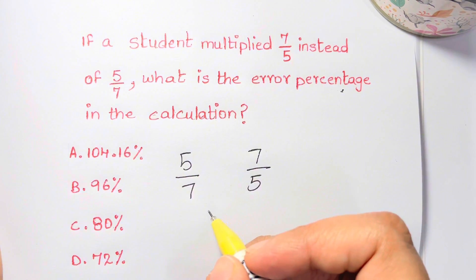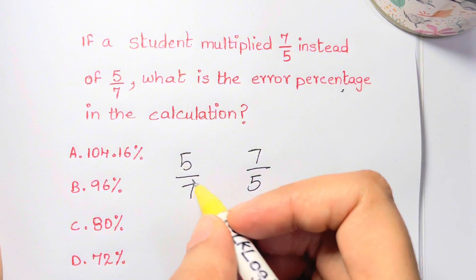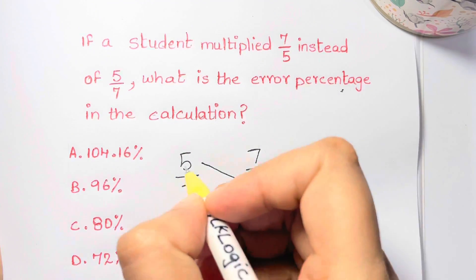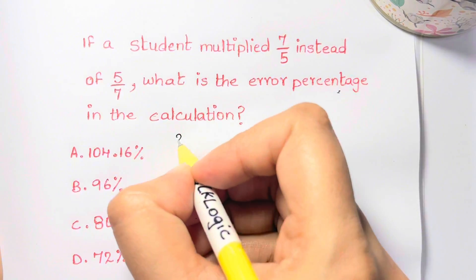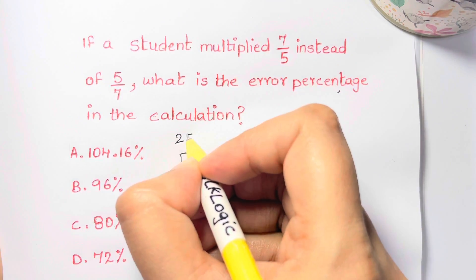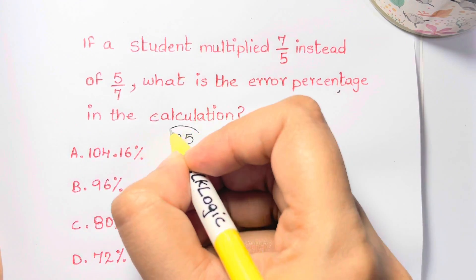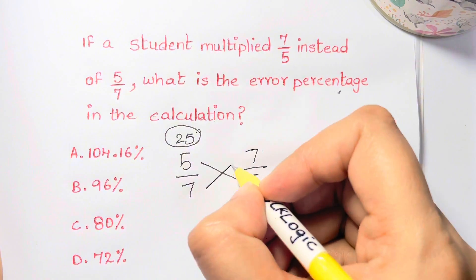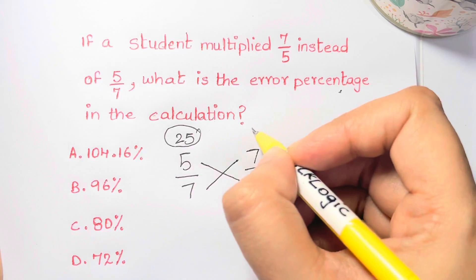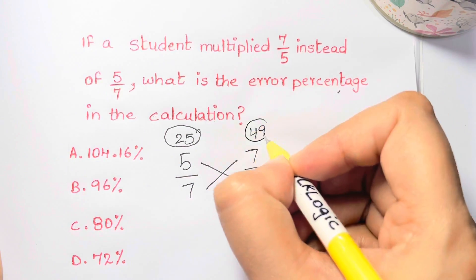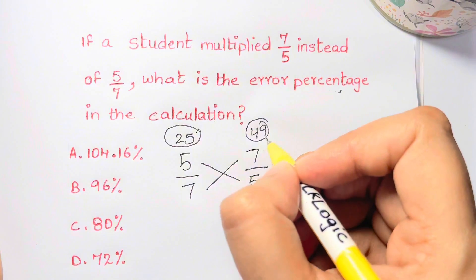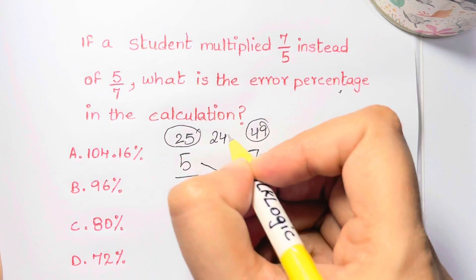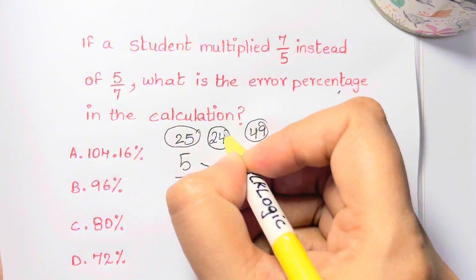Here's what we're going to do — cross multiply: 5 times 5 gives 25, and that's the actual value. Now 7 times 7 gives 49, and that's the error. So 49 minus 25 gives 24.